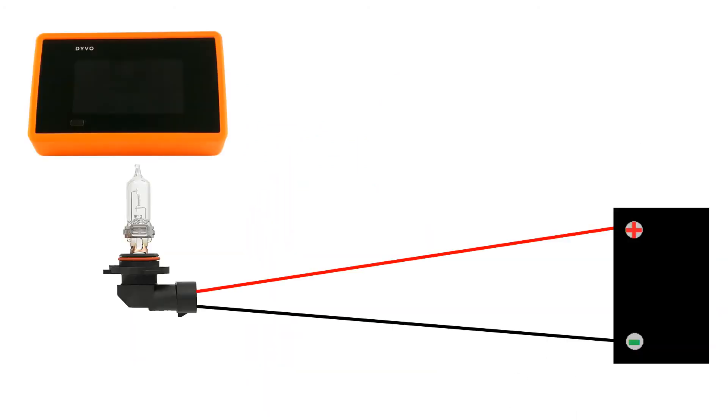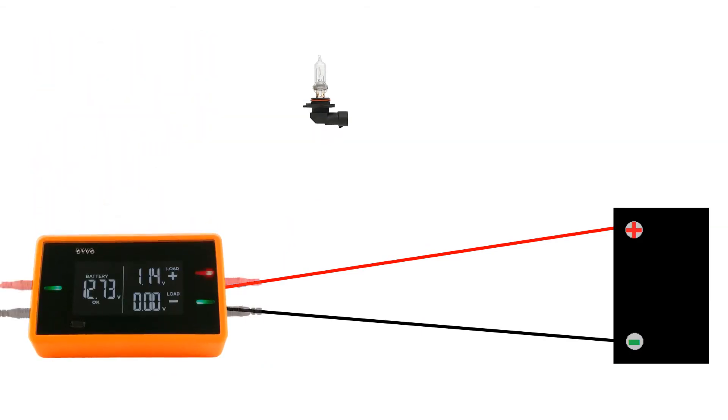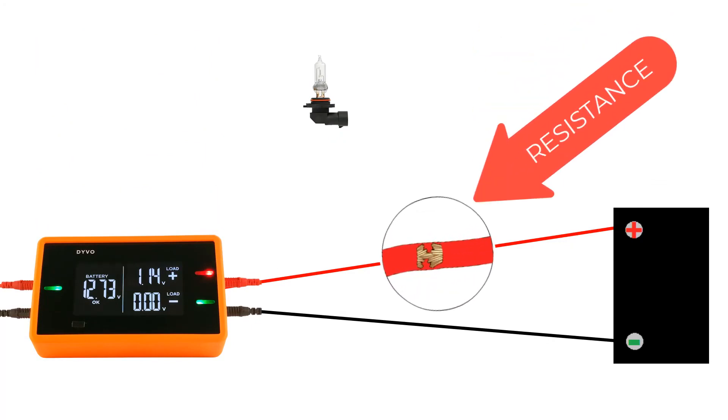Here we have a light bulb that doesn't turn on. We'll remove the light bulb and put DEVO in its place, acting as a known good component. We can see the battery voltage is 12.73, but our positive LED is red and we're only getting 1.14 volts to our component. This is because we have high resistance in the circuit. The resistance causes a voltage drop from 12.73 at the battery to 1.14 at the component.